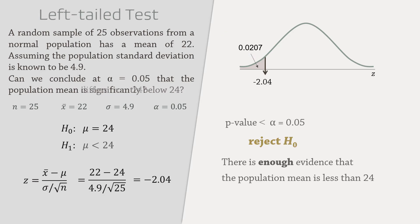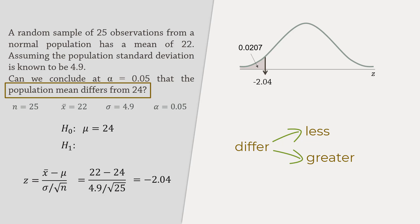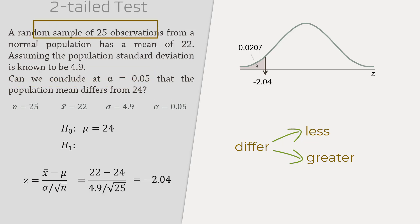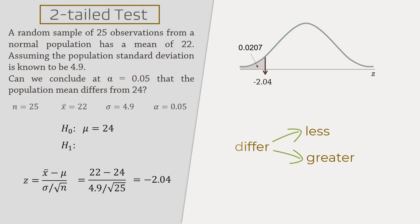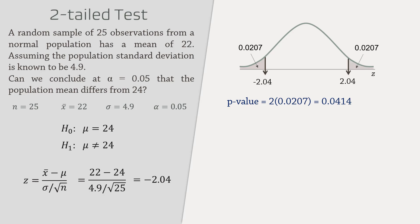Next, suppose we want to test if the population mean differs from 24 at alpha equals 0.05. Since 'differ' or 'different' could be either less than or greater than, this is referred to as a two-tail test, or a non-directional test. The alternative hypothesis is written as mu not equal to 24. The p-value for the two-tailed test will be 2 times the one-tailed p-value, because the one-tailed p-value is mirrored in the other tail of the distribution.